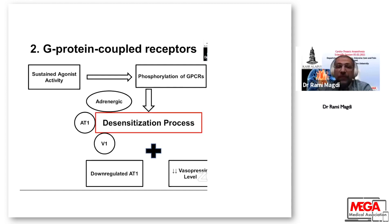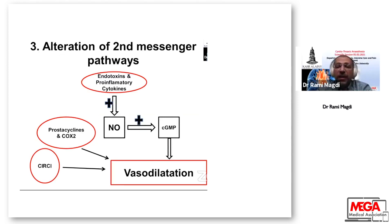At the cellular level, sustained agonist activity leads to phosphorylation of G-protein coupled receptors, causing desensitization of adrenergic, angiotensin-1, and vasopressin-1 receptors. There is also downregulation of angiotensin-1 and decreased vasopressin levels. At the intracellular level, endotoxin and pro-inflammatory cytokines release nitric oxide, which increases cyclic GMP, leading to vasodilation. This is further contributed to by prostacyclin, cyclooxygenase-2 enzyme, and critical illness-related corticosteroid insufficiency.